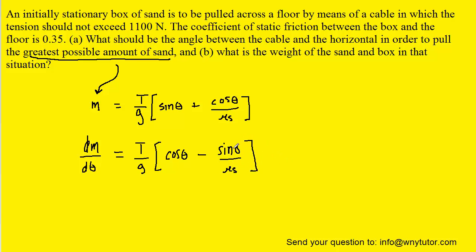So after having the derivative, we would set it equal to zero. We can divide both sides by the term T over g. We can then subtract cos theta over to the right side. The negative signs can be cancelled.